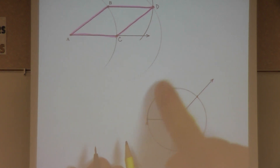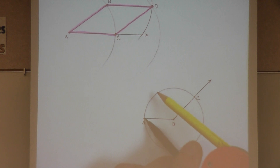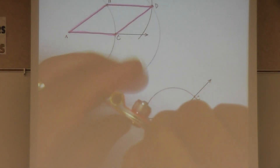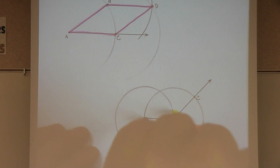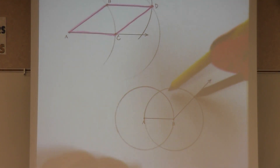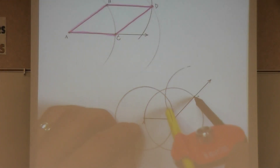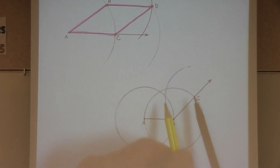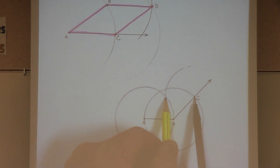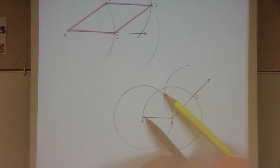Now that fourth vertex has to be over here somewhere. I've got A, I've got B, I've got C. To find that last vertex, I'm going to take the compass, center it at A this time, same length, and draw a circle centered at A. I'm also going to draw one centered at C and find where the last two circles intersect. This length is the same as this length, is the same as this length, is the same as this length. If all four sides are equal, that's a rhombus.